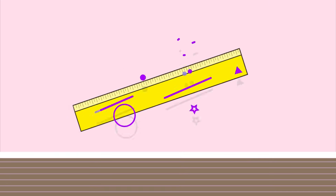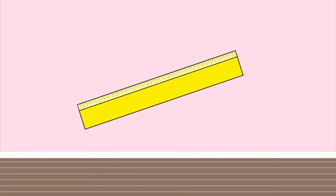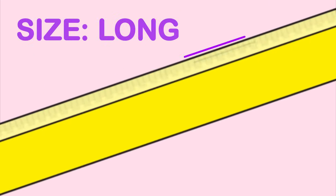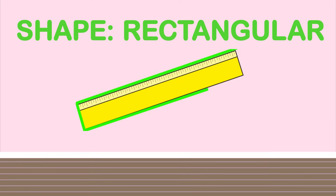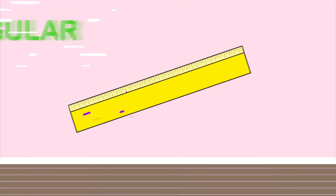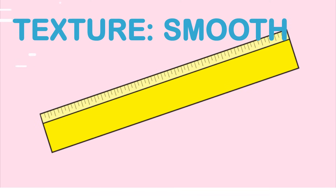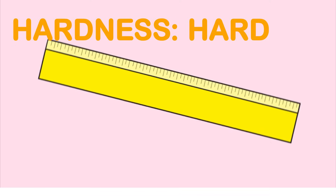Another example: a ruler. It's yellow, long, and rectangular. When you touch it, it's smooth. When you press it, it's hard.